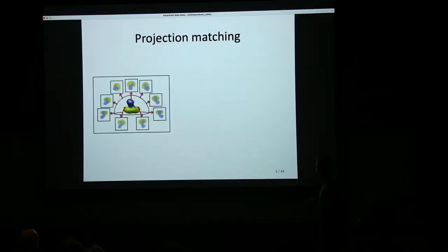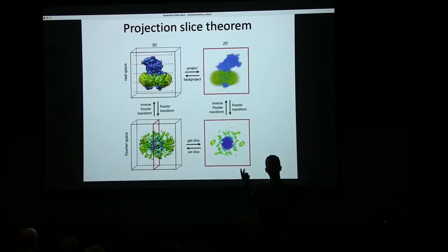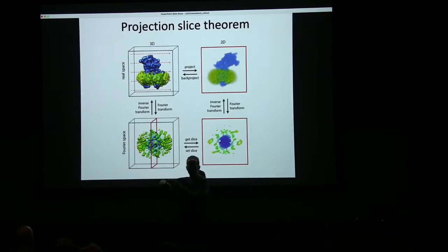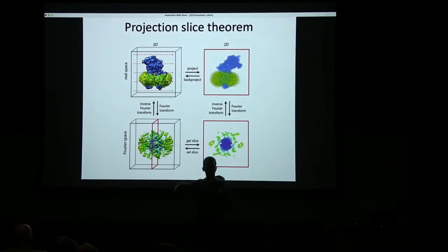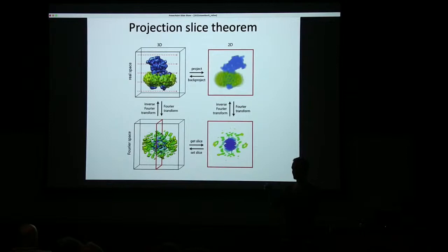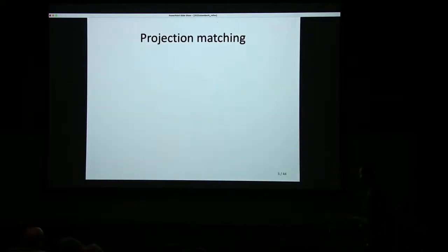What that means is: if I can somehow orient all my two-dimensional projection images relative to a common three-dimensional framework, I will be sampling 3D Fourier space with many differently oriented 2D slices, slowly filling up the entirety of 3D Fourier space. Doing a three-dimensional reconstruction is nothing more than doing the inverse transform in 3D. That raises the question: how do I get to know all the relative orientations of each of these individual 2D projection images, when all I have is a collection of thousands of grainy images with multiple copies of these molecules?